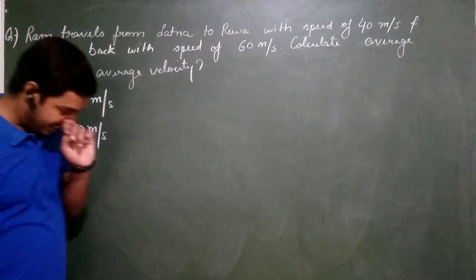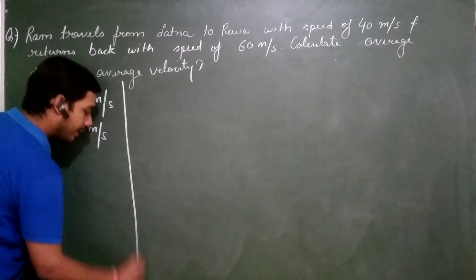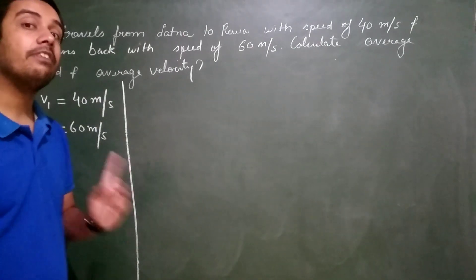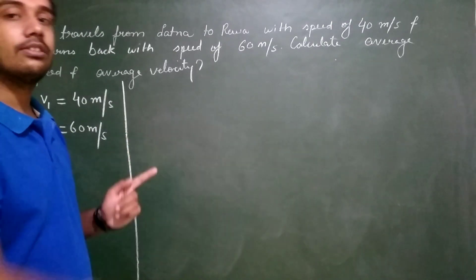You have to calculate two things: average speed and average velocity. The formula is the same. Now which formula is the same? 2V1V2 upon V1 plus V2, because it is covering equal distance on either side.